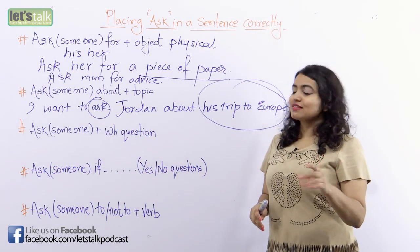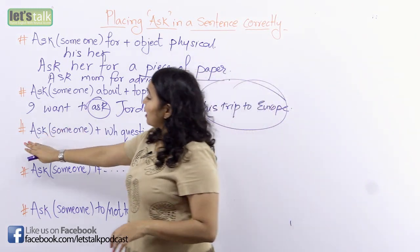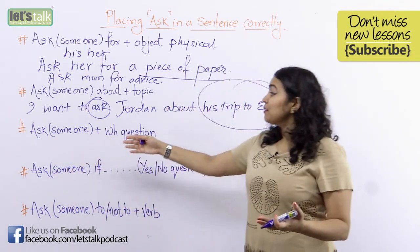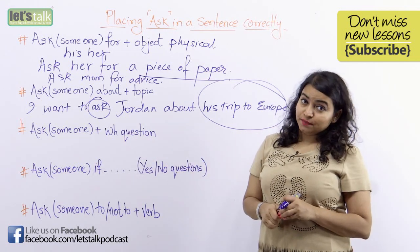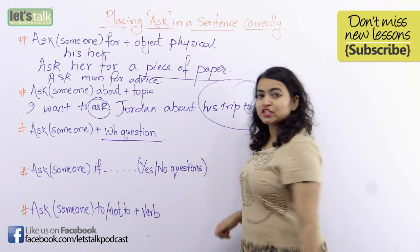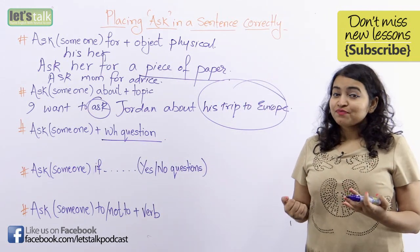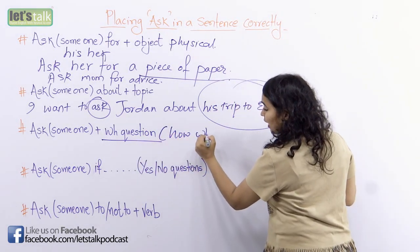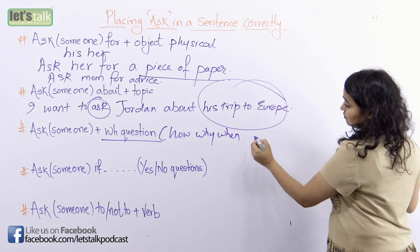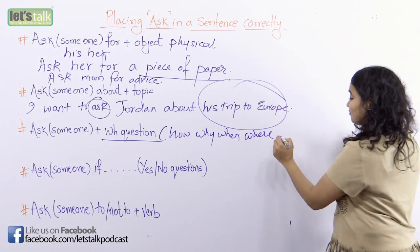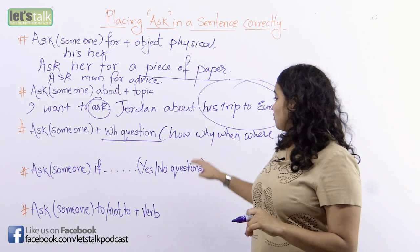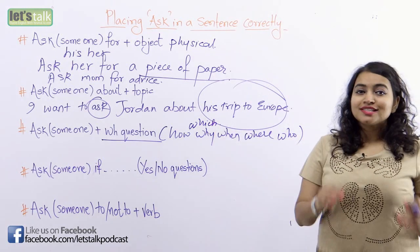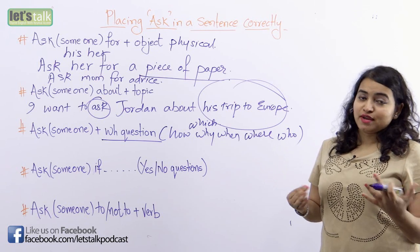The third way of using 'ask' in a sentence is by placing 'ask', then someone — 'his', 'her', or a name — followed by a WH question. WH questions include words like how, why, when, where, and who. If you are not familiar with WH questions, there is a lesson available on that topic.